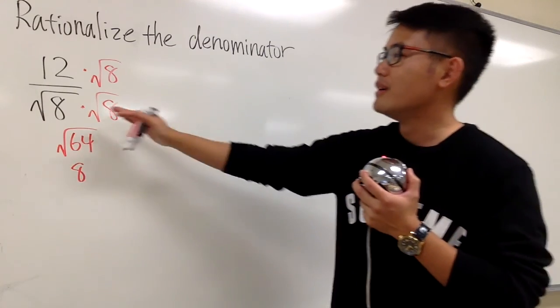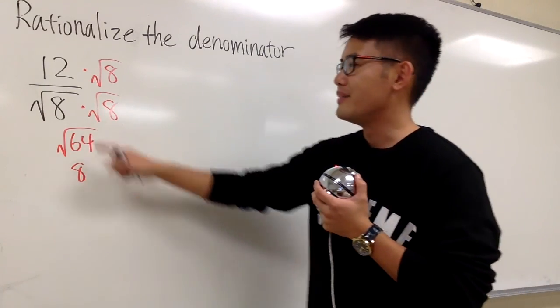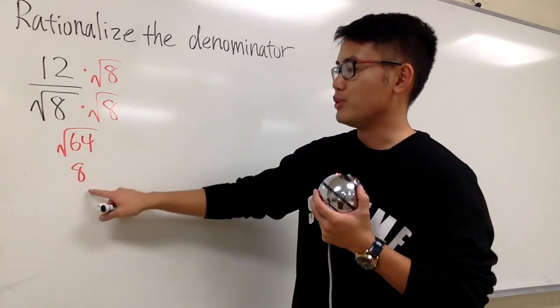You could have taken the shortcut because square root of 8 times square root of 8 is just the inside, 8. This is the beauty of square root numbers, right? If the insides are the same, it's pretty much just inside.